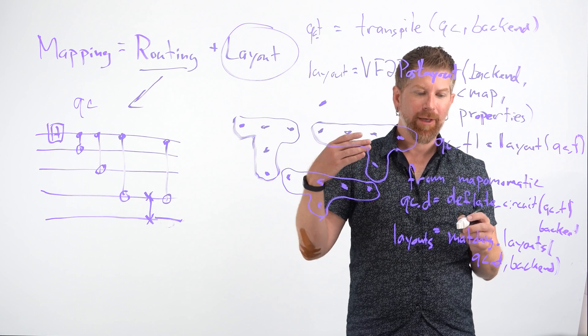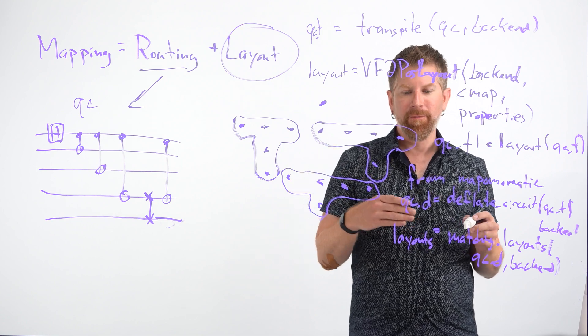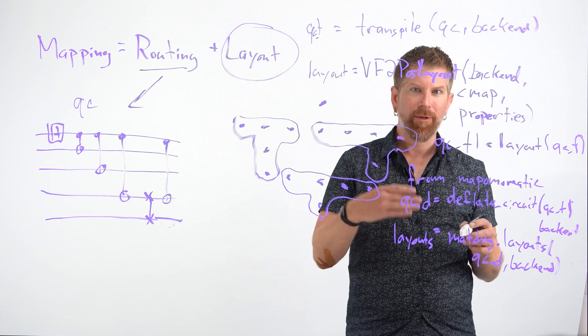It will multiply the fidelity of the single qubit gates, two qubit gates, and the readout error measurement fidelity, and then return an infidelity metric. So it will invert that, give you one minus the fidelity, meaning that the lowest score is the best, and that will be the first one reported.